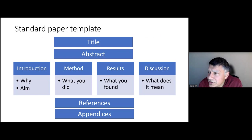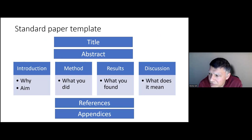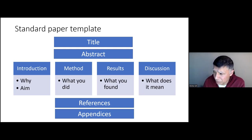In terms of the standard paper template, we have the title, abstract, introduction, methods, results, and discussion. The introduction should explain why you're undertaking the study with a clear statement of aim or hypothesis. Methods is what you did; results is what you found; discussion is what it all means.